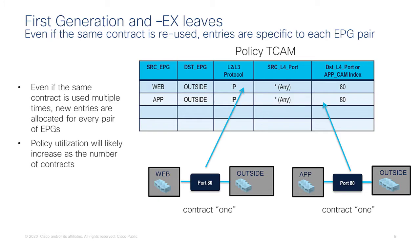So if you had not just port 80 but also port 443, you would have four entries in total, not just two. And this is not even counting the fact that these entries are bidirectional. For the example of port 80 only, the total entries would be four. For the example with 80 and 443, we're talking about eight entries total. So how about going from four entries in the policy cam down to just one entry? That's what this optimization is about.